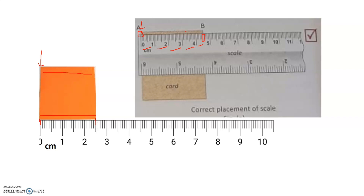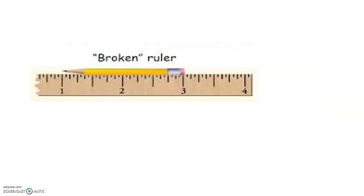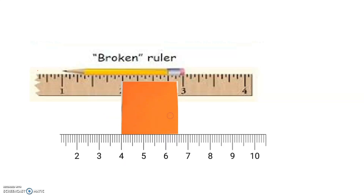This is how we measure the length of objects using the scale. Now, for example, if one end of your scale is worn out or you have a broken scale like how you see here in the picture — how do you measure the length of an object? Even with a broken scale, we can still measure length. You need to place the card along the length of the scale like how you see here in the picture. In this scale, the mark zero is missing or worn out, so the card is placed starting at any other mark.